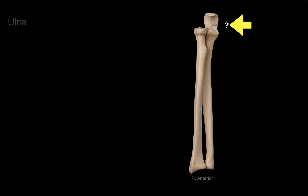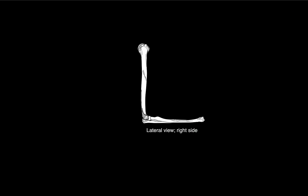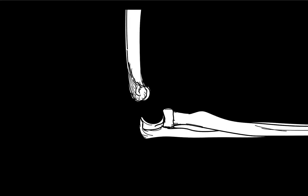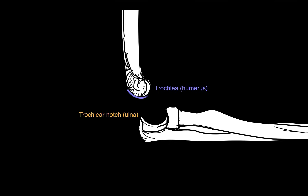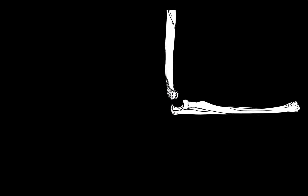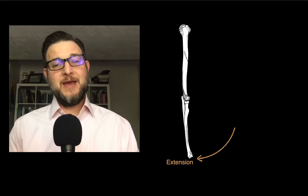Anatomists said: what do we call this notch? This notch articulates with the trochlea on the humerus, so we call it the trochlear notch. Looking at a lateral view of the right elbow blown up, there is the trochlea of the humerus and the trochlear notch of the ulna coming together.